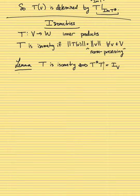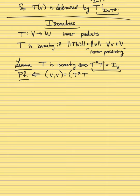The proof is easy. For the forward direction: if T*T = I, take any v in V and look at its inner product with itself. This equals the inner product of T*T(v) with v since it's the identity, and by the adjoint formula this equals the inner product of T(v) with T(v). So the inner products — and therefore the norms — are preserved.